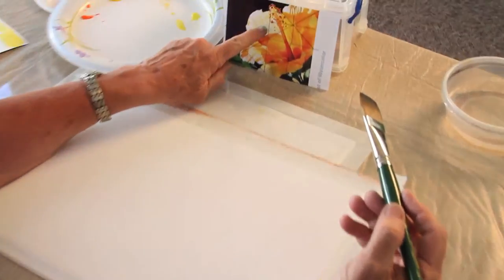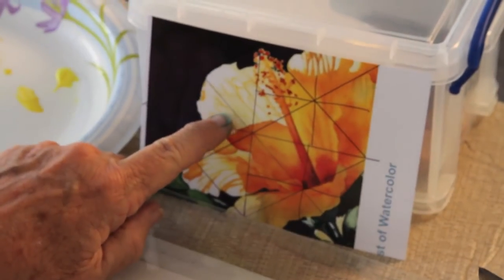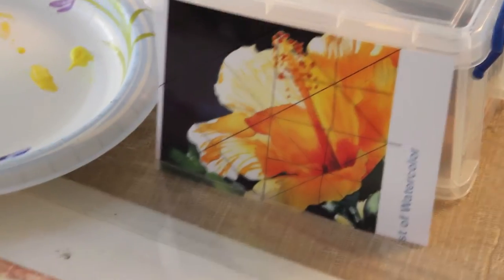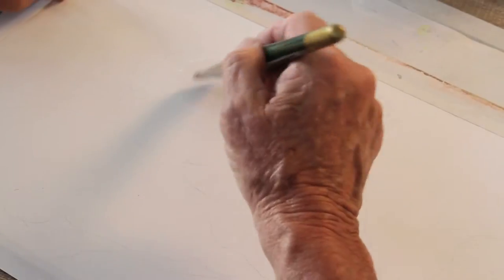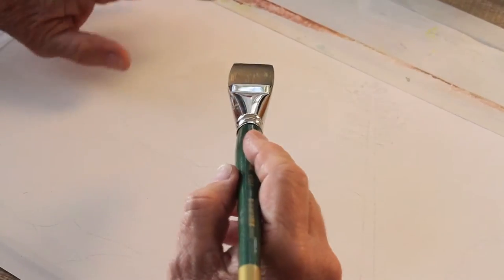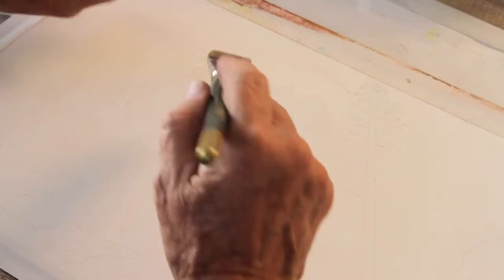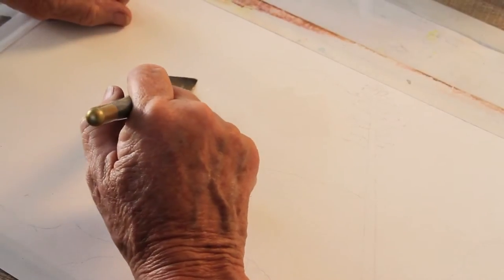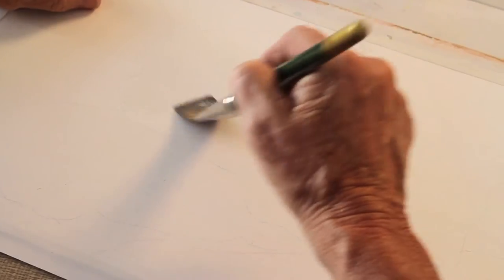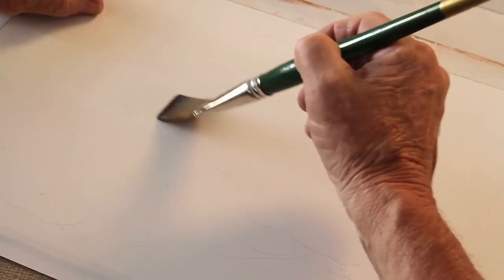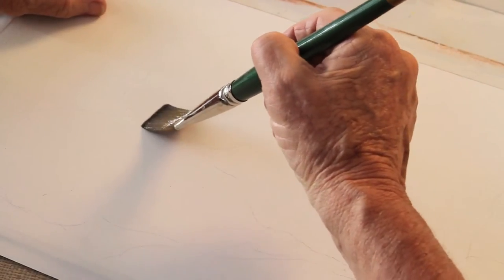And this petal right here is the lightest, so I'm going to wet my paper, and wherever I put water, that's where the paint will go. If I don't put water out here, no matter what I do, that paint won't go out there. It's kind of a surface tension thing, and it will just stay right where you put it. The paint will just stay right in the water.